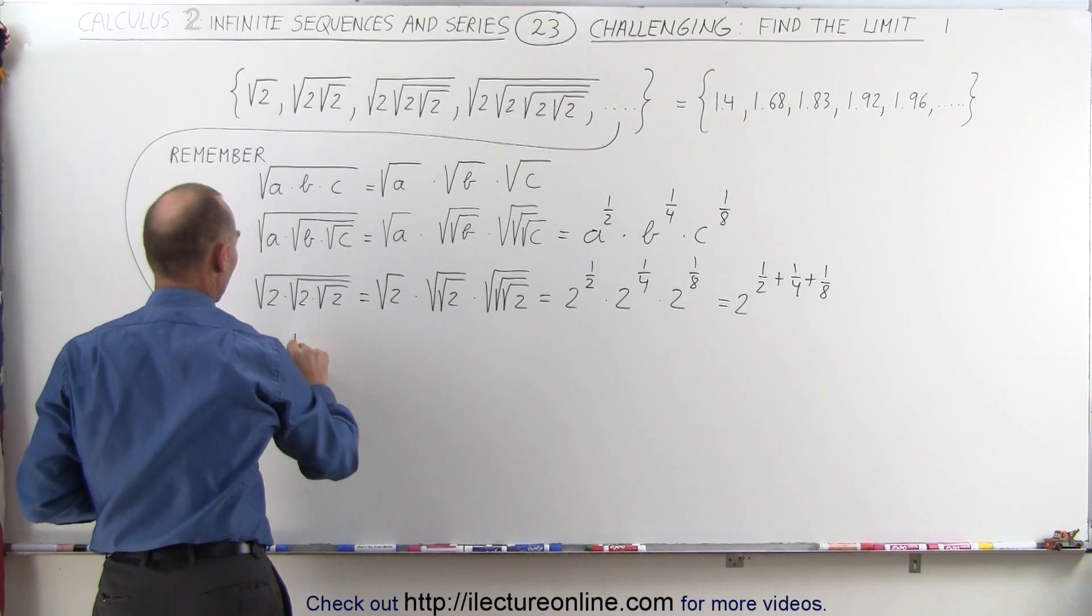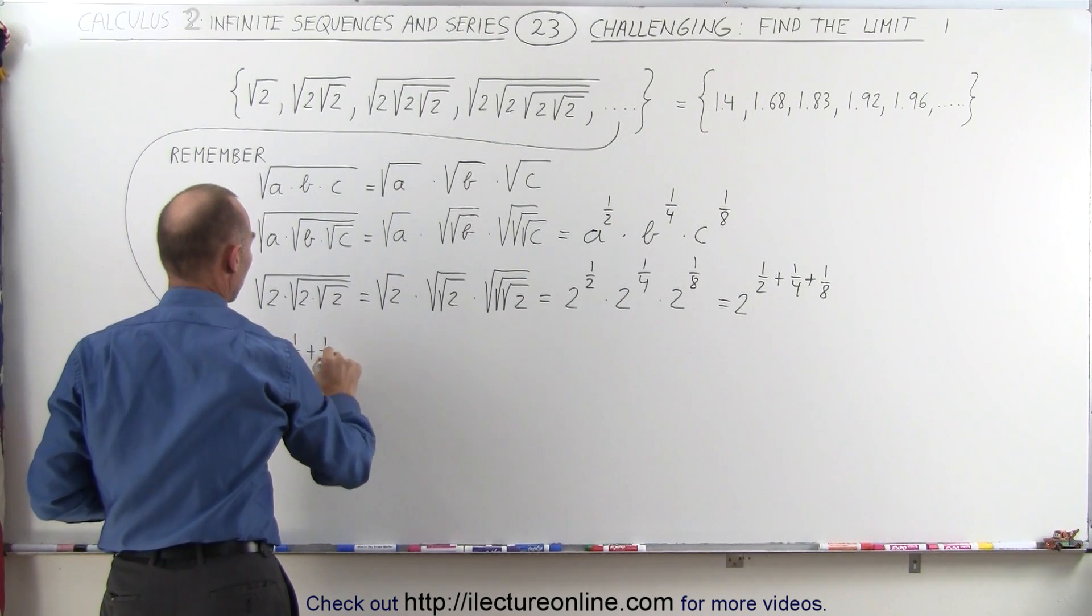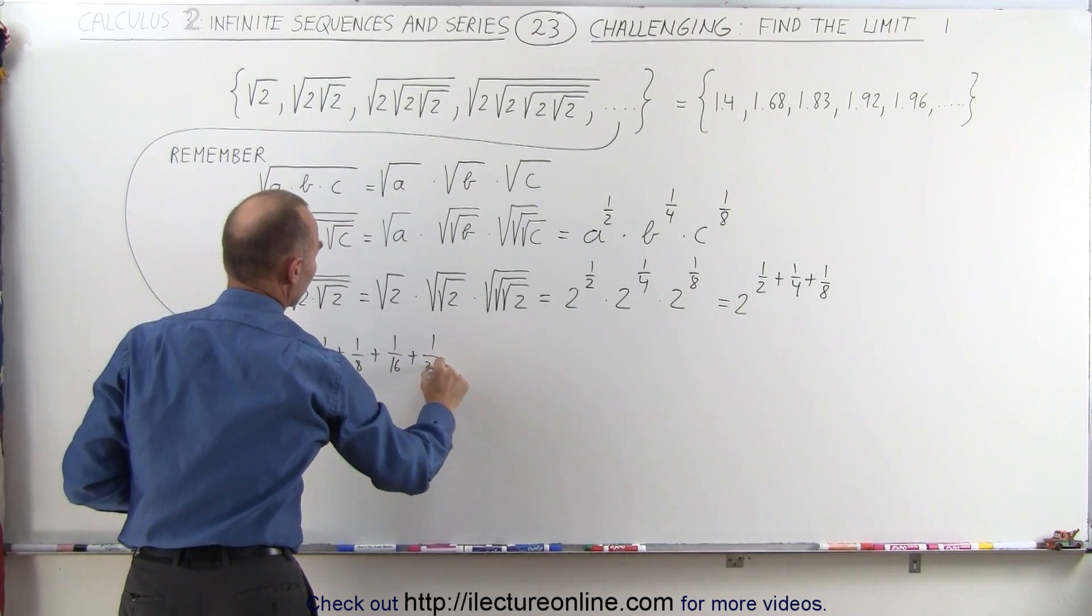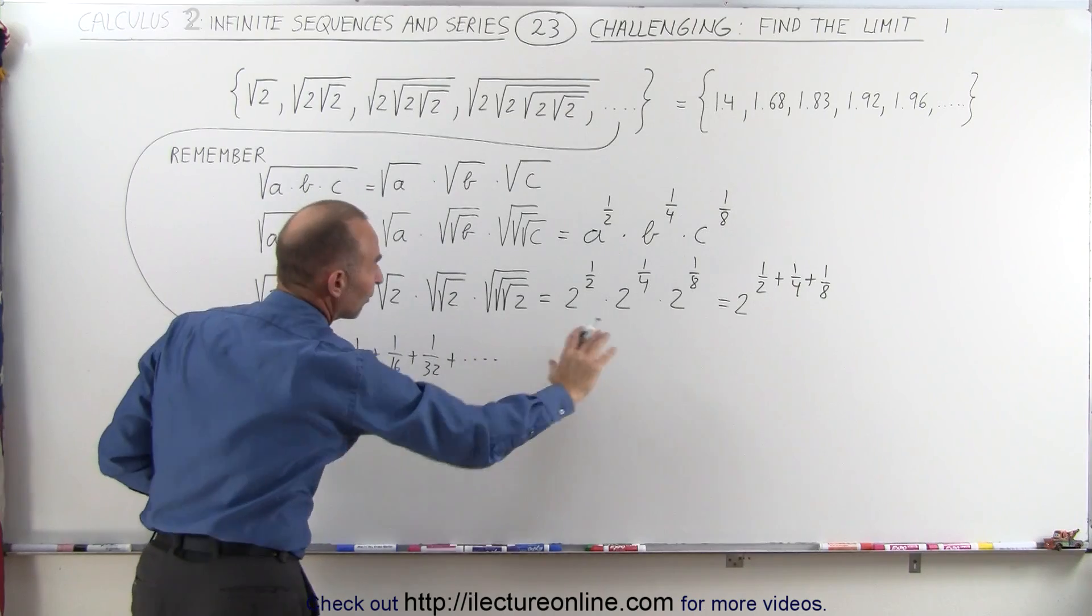can be written as 2 to the 1 half power plus 1 quarter power plus 1 eighth power plus 1 over 16 power plus 1 over 32 power plus so forth out to infinity.